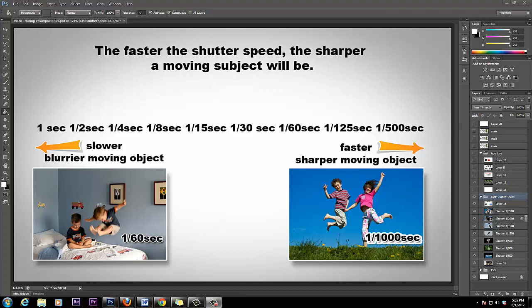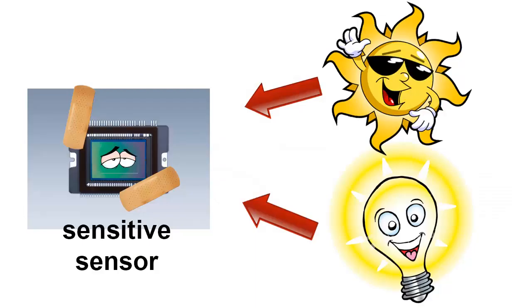You have an understanding of what aperture is. Now let's talk about shutter speed. Shutter speed means how long the film sensor is exposed to light. To help you understand, say you're in a dark room — a closet where no light is. The closet is the camera. Say you have a thousand-watt light bulb outside of that door. When the door is closed, no light is getting in. Shutter speed is basically you opening the door and allowing light to get inside the closet — and how fast you open and close that door.